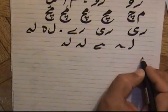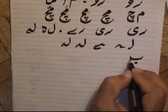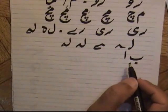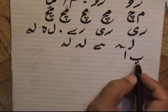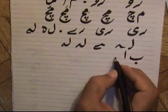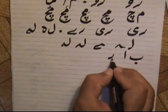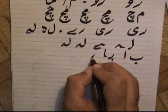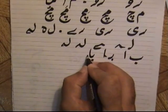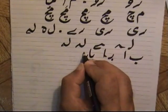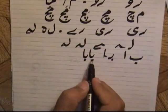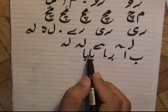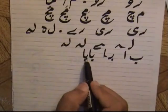There is ba-alif: 'ba'. Ba is a connector so it will assume the initial position, and alif is a non-connector. So we write 'ba', and if we repeat it — ba-ba — you cannot connect alif-ba because alif is a non-connector. So there are two separate parts.